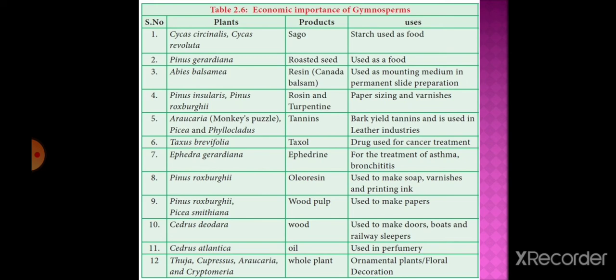Ephedra gerardiana produces ephedrine, a drug used in the treatment of asthma and bronchitis. Pinus roxburghii produces oleoresin, which is used to make soap, varnishes, and printing ink. Pinus roxburghii and Pseudotsuga smithiana produce wood pulp used to make paper. Cedrus deodara - the wood from this plant is used to make doors, boats, and railway sleepers.